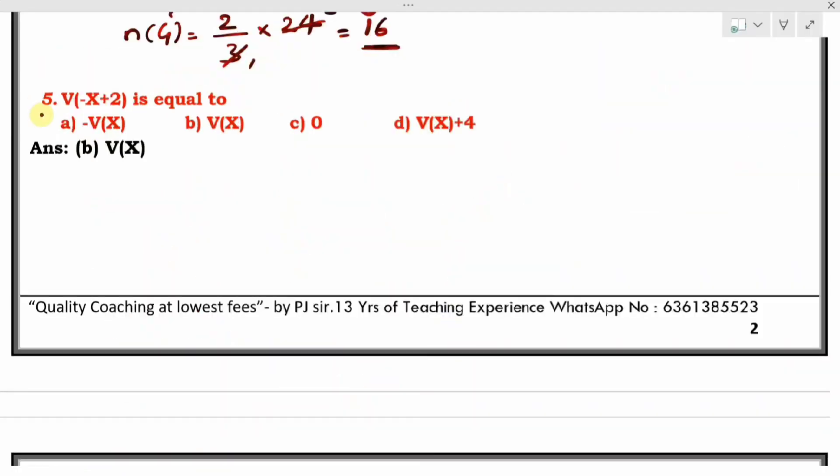Next, question number 5: Variance of (-X + 2) is equal to? This is from the chapter on random variables. What is given is variance of (-X + 2) equals question mark. So variance of (-X) means (-1X). What is the coefficient of X here? It is -1.